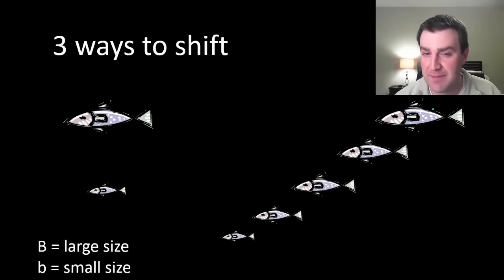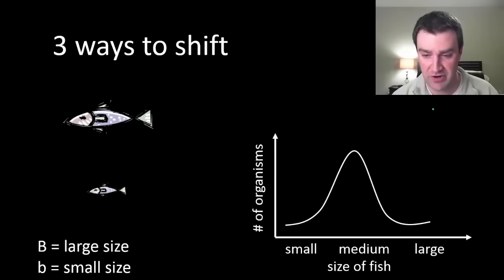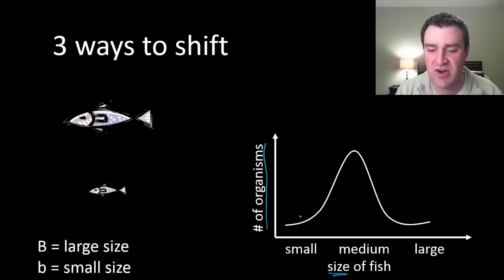For most populations there's kind of a bell curve of different organisms for different phenotypes. Maybe here on the x-axis we have different fish sizes. On the y-axis we have how many organisms in that population are each type. It makes sense that in many cases populations are kind of a bell curve for a certain set of phenotypes.